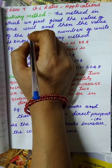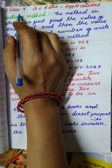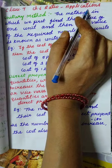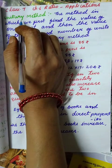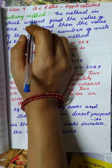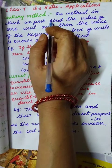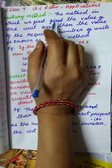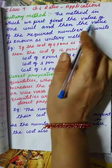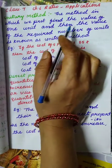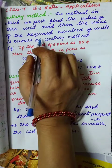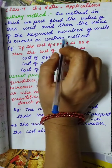Hi children, today we are discussing Class 7, Chapter 6, Ratio and Applications. Today our topic is the unitary method. The method in which we first find the value of one unit and then the value of the required number of units is known as the unitary method.